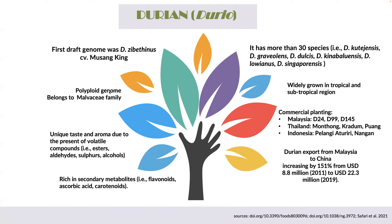The first rough genome of Durio was established in 2017, from the Durio zebanthinus cultivar Musang King. Durian has a polyploid genome and belongs to the Malvaceae family. It has a unique taste and aroma due to the presence of volatile compounds such as esters, aldehydes, sulfides, and alcohols. Durian is also rich in secondary metabolites, which are beneficial for human health.